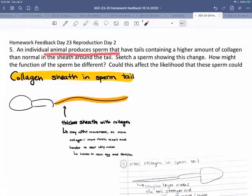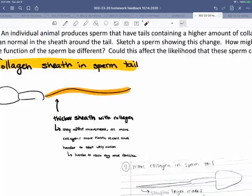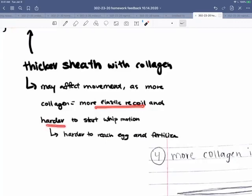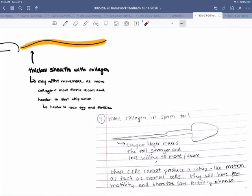So this was a problem. An individual animal produces sperm that have tails containing a higher amount of collagen. So surrounding this part of the flagellum for a good part of the length is a collagen sheath. And what that collagen sheath does is when the tail bends, it provides some elastic recoil to send it back. So we need the dynein to cause the bending, and the elastic recoil will help to bring it back. And it helps with the swimming motions. So if you have a thicker sheath, then with more collagen, you're going to get more elastic recoil, but it's going to take more energy to start the movement back and forth. So it's harder for the sperm to reach the egg. Again, here's this tougher layer. It makes it stronger, but it's going to be harder to move and swim. So they're going to be not as fast. They're going to be slower motility.